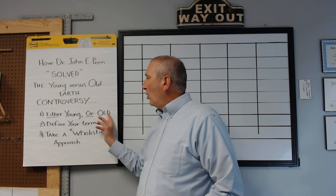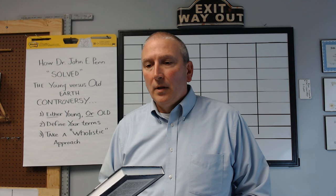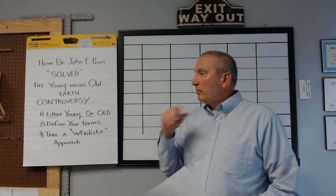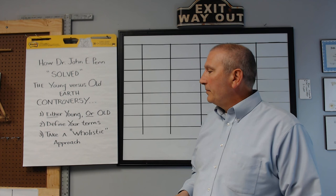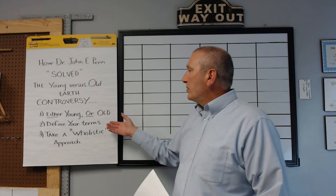He noticed first that either/or — either young or old — is very common in a lot of the controversies and perceived contradictions in the scriptures. So one of the first things he always recommends, and he describes his hermeneutics as holistic and historical, is to define your terms. That's point number four in his book, and of course we all know that's really where a lot of the confusion originates — what does someone mean when they say young and what does someone mean when they say old? So he said, take a holistic approach.